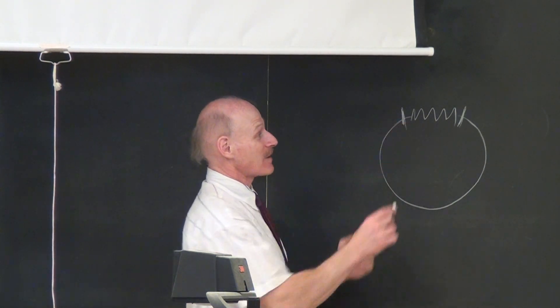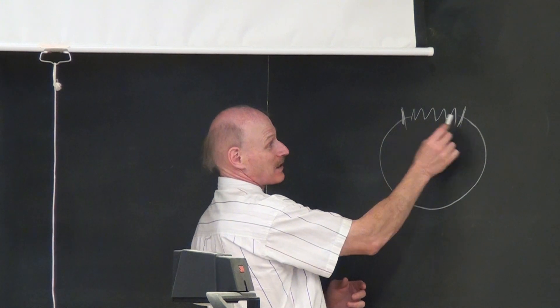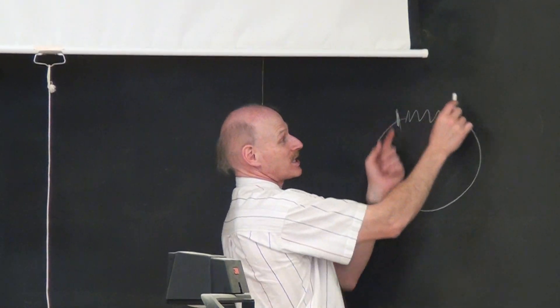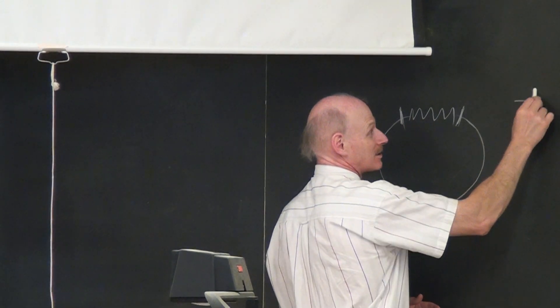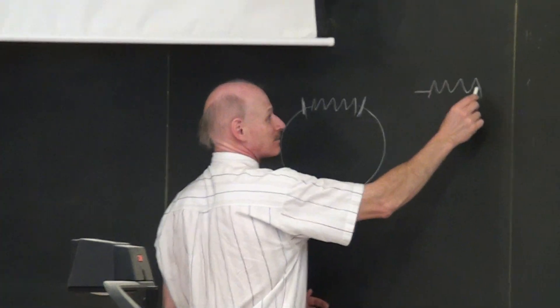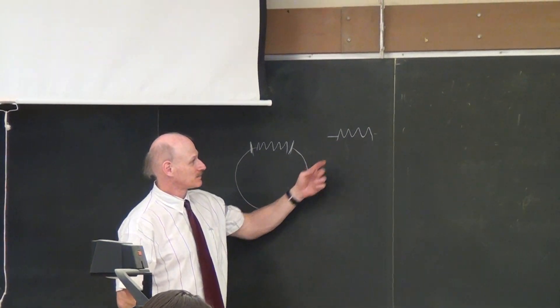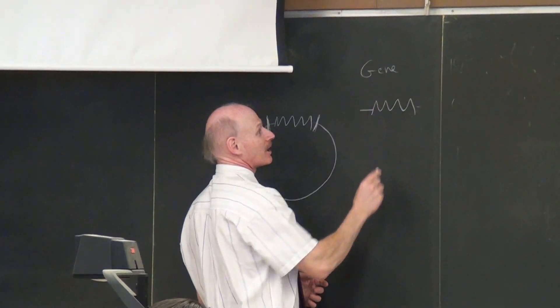So let's imagine that you did a restriction map and you found out that by cutting with this restriction enzyme and this restriction enzyme, you can get out that chunk like that. So there's your gene of interest and you want to sequence it.